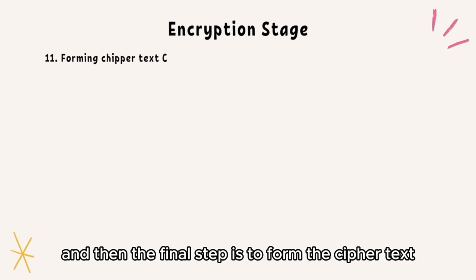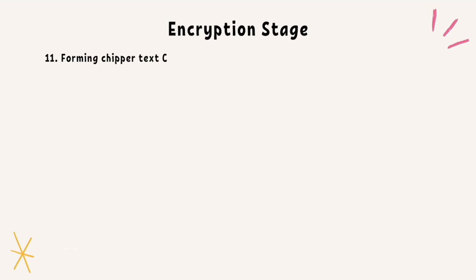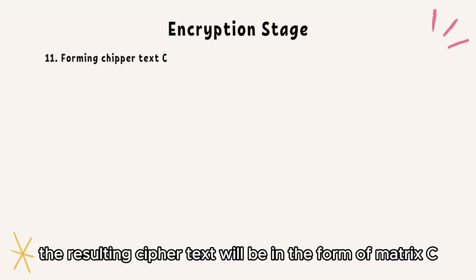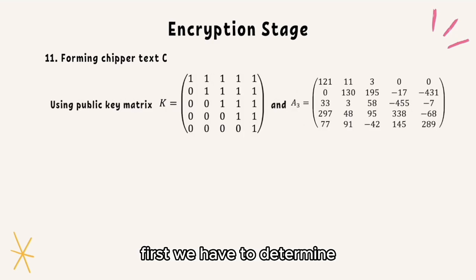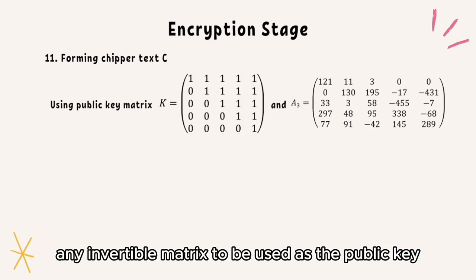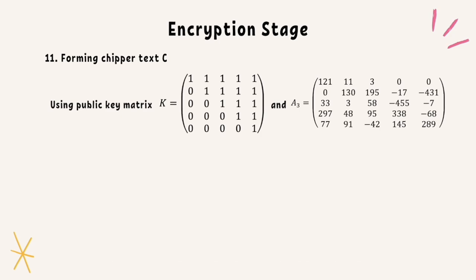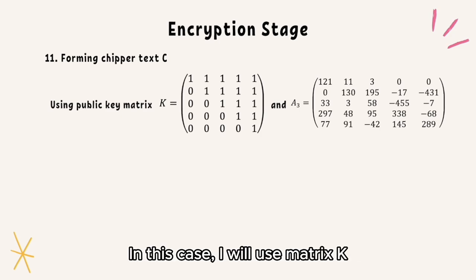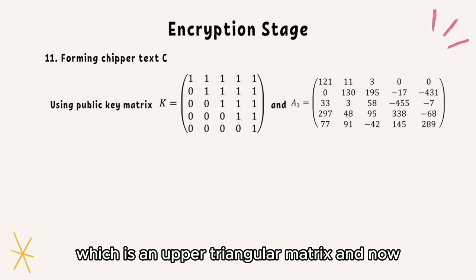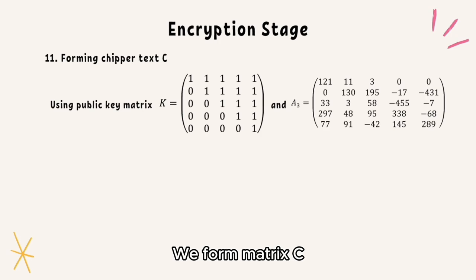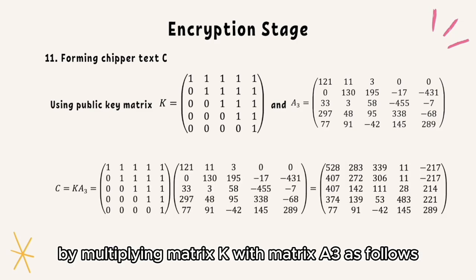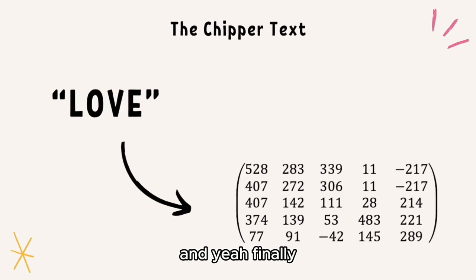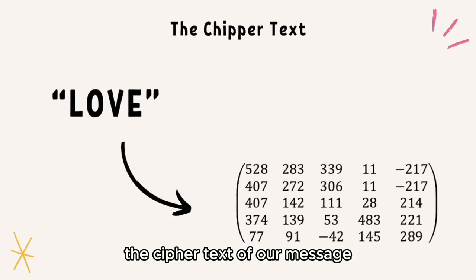The final step is to form the cipher text. In this algorithm, the resulting cipher text will be in the form of matrix C. First, we have to determine any invertible matrix to be used as the public key. In this case, I will use matrix K, which is an upper triangular matrix. Now we form matrix C by multiplying matrix K with matrix A3 as follows. Finally, the cipher text of our message 'love' is this 5×5 matrix.